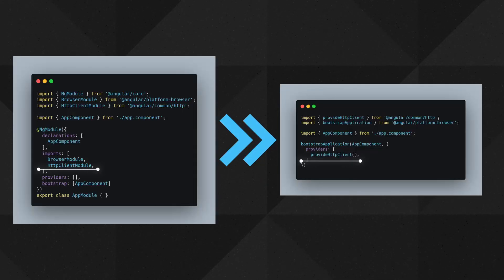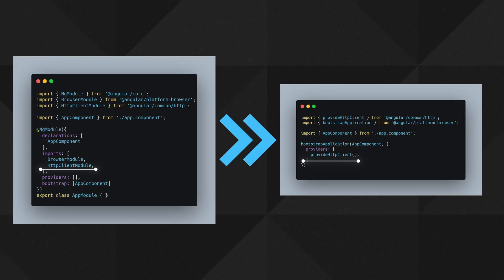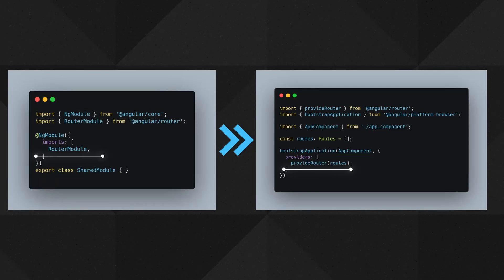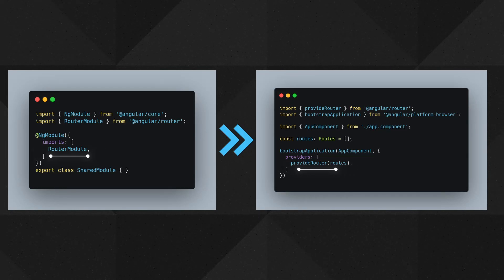So not using any ng-modules. This also means that their own built-in modules got some replacements. For example, instead of the HTTP client module, we can use provideHttpClient. Or we can use provideRouter instead of Router module. This stands for forRoot and forChild routes.